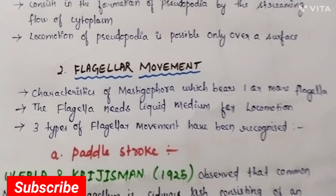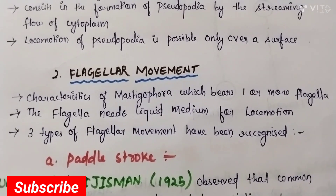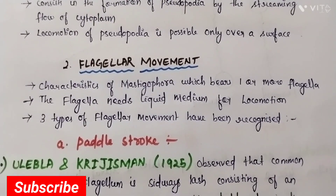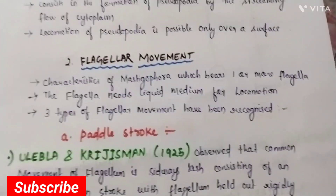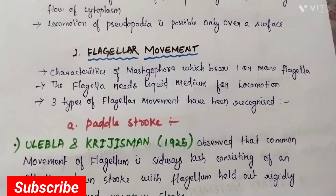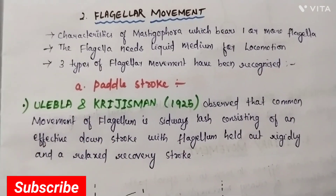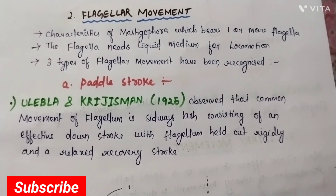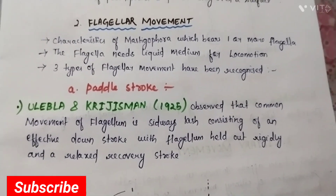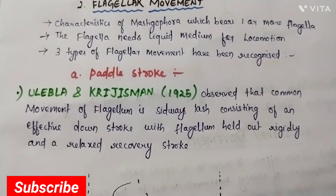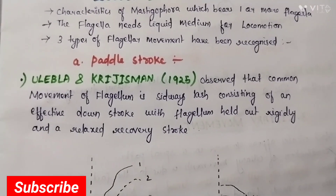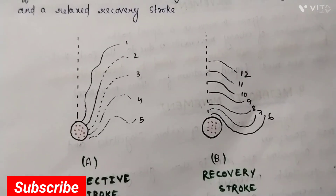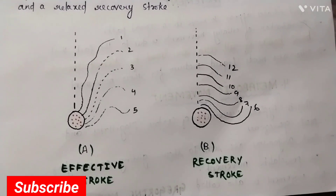Flagellar movement is a characteristic of Mastigophora, which bear one or more flagella. The flagellum needs a liquid medium for locomotion. Three types of flagellar movements have been recognized. The pedal stroke: observed in 1925, the common movement of the flagellum is sideways, consisting of an effective downstroke with the flagellum held out and a relaxed recovery stroke. These are the diagrams of the effective stroke and recovery stroke.